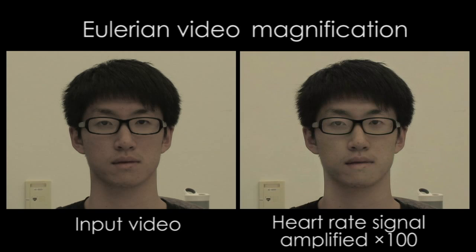Using a technique called Eulerian video magnification, we are able to make this variation visible. In this example, the heart rate signal is amplified by a factor of 100.